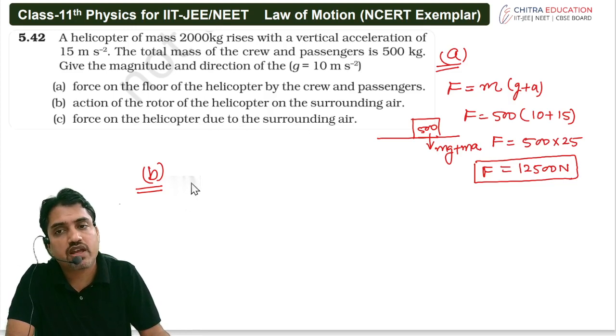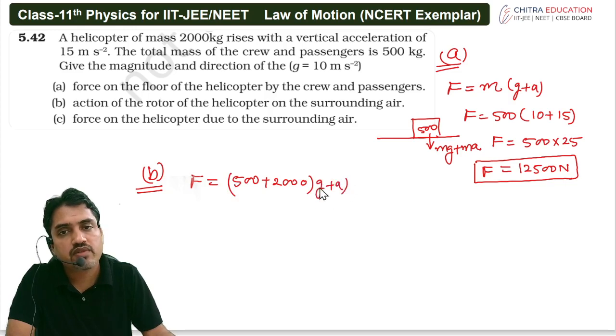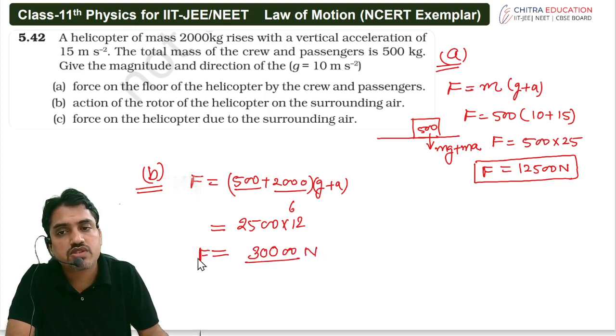So this B part, the total mass is 500 plus 2000 into G plus A. Here you have to get the passenger and the helicopter also get the acceleration 15 meter per second, so both mass into total acceleration. So it will be 2500 into 25, so that much Newton. Itna force surrounding air pe lagana padega tab jake woh upar uthega.